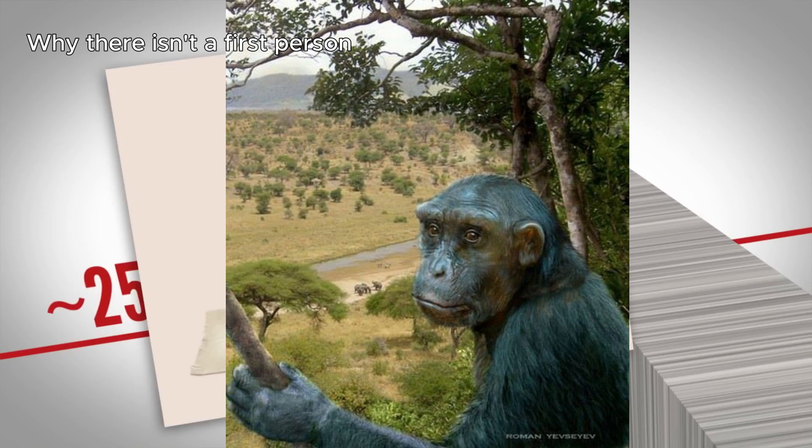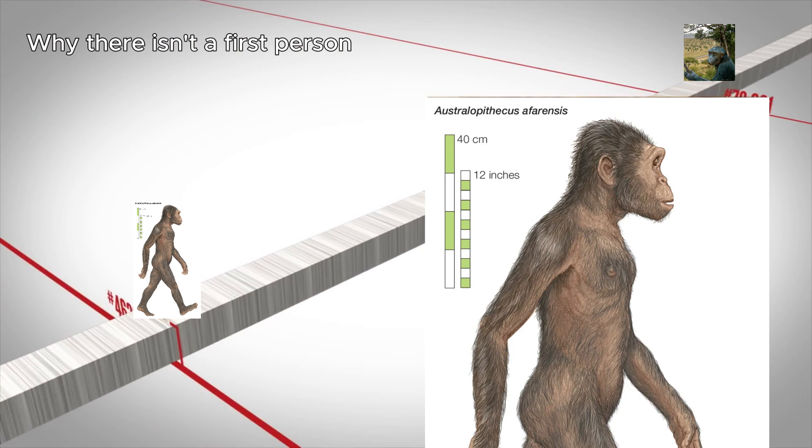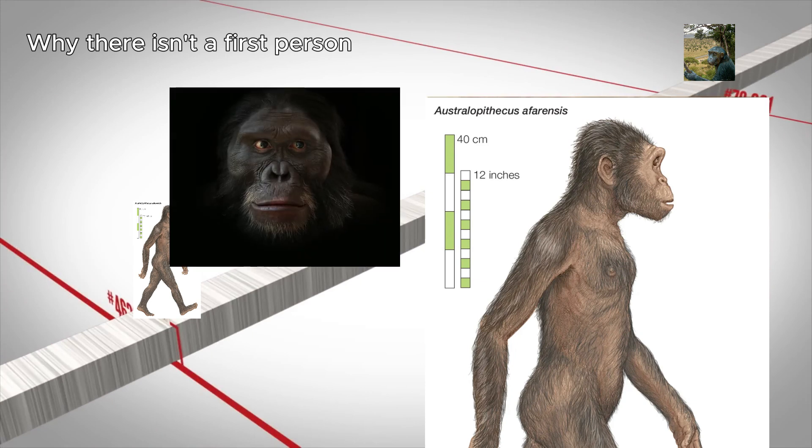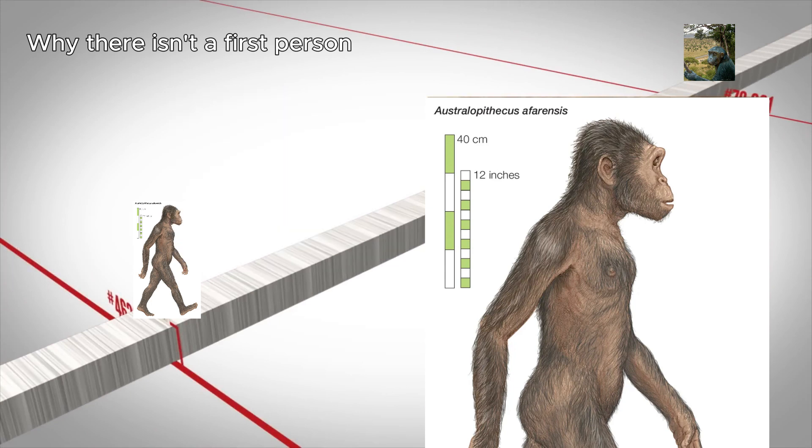Four million years ago, we have Australopithecus afarensis, who wasn't a human. But remember, it wasn't that they suddenly went from non-human apes to human apes. It was a gradual process in between, in which small changes over those two million years yielded enough genetic change to produce a species different enough that we see them as a human and not a chimp ancestor.